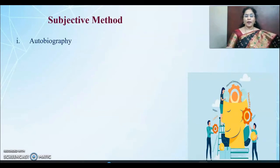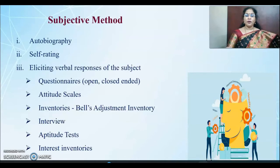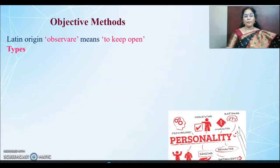Subjective method — the best example is autobiography. If a person is asked to go for self-introspection and write a report about that, that is the subjective method. There they will go for self-rating and project themselves as a very good human being. This method also includes collecting data from people using questionnaires, attitude scales, inventories, and interviews, by which people project their positive side of personality and hide all their limitations. That is why this method is called subjective — it involves bias and prejudice.